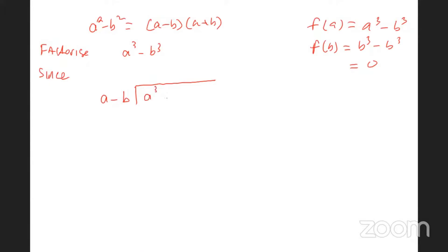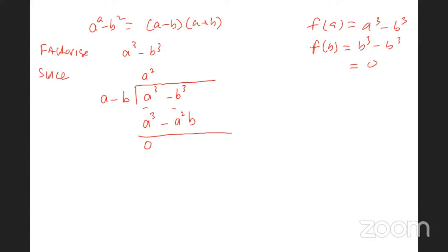Now let's do the long division. Dividing a cubed minus b cubed by (a minus b): a into a cubed gives a squared; a squared times a is a cubed, a squared times (minus b) is minus a squared b. Subtracting: a cubed minus a cubed is zero; there is no a squared b term so we have zero on top, giving us plus a squared b. Bring down minus b cubed.